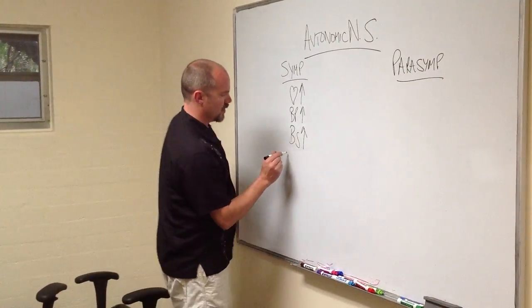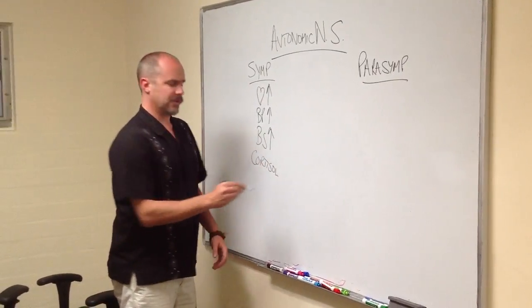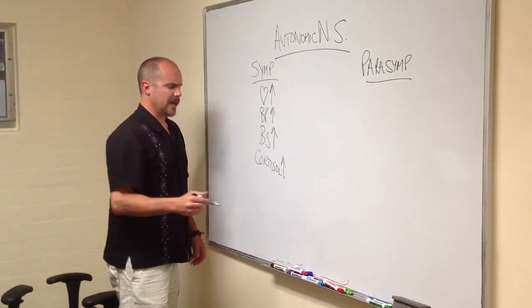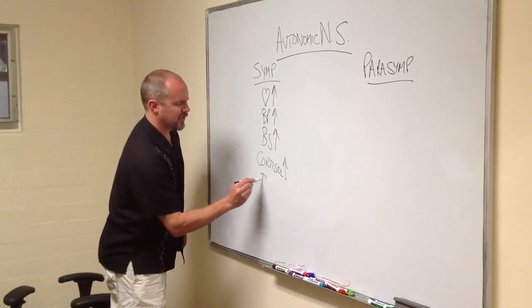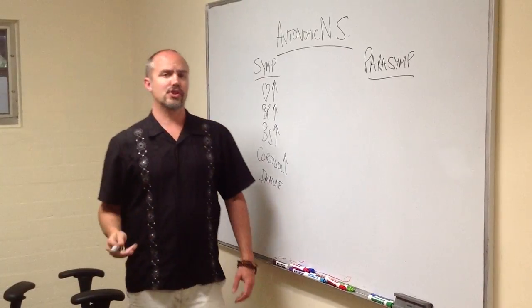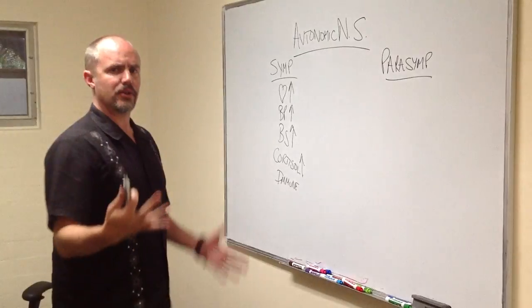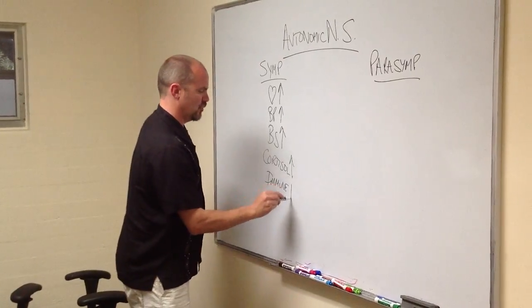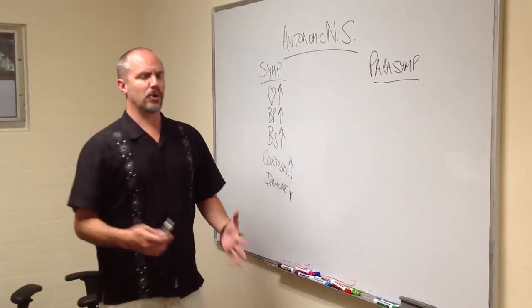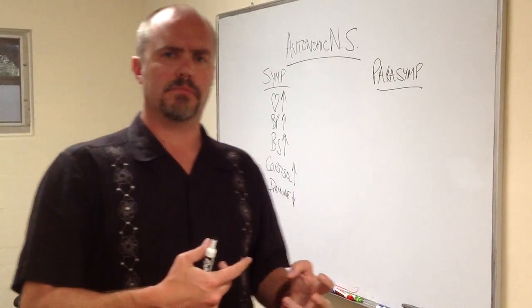What about cortisol levels? Cortisol is a stress hormone. So, cortisol goes up. What about your immune system? Immune system, when you're stressed, goes down. So, when you're stressed out, you can get sick more easily. Your immune system gets suppressed because it's more important to send blood to your muscles to run and fight than it is to stimulate your immune system.